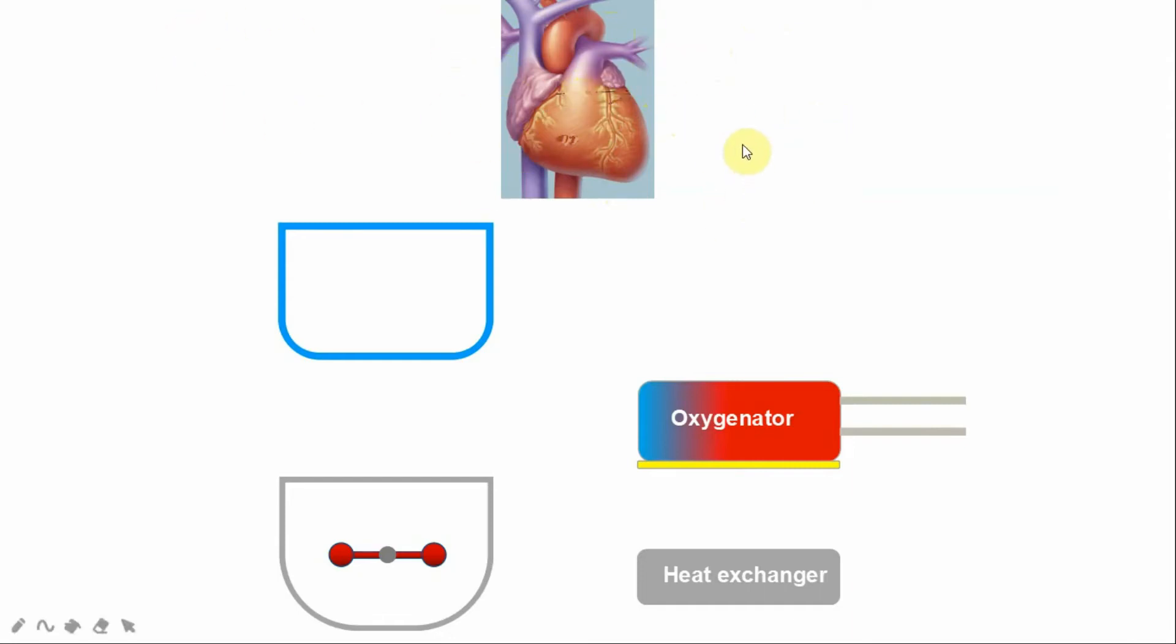What happens in case of cardiopulmonary bypass is that we take over the function of the heart and the lungs. So the patient can survive four to six hours or even longer without the heart or the lungs, as the surgeons are doing the operation. In this cardiopulmonary bypass, there are some components.